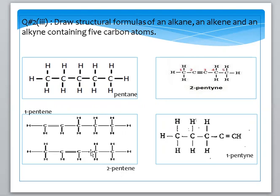If the double bond is at position three or four, numbering starts from the nearest end. So there are two main possibilities for the pentene structural formula: 1-pentene with the double bond between C1 and C2, and 2-pentene with the double bond between C2 and C3. For pentyne with a triple bond, there are similarly two possibilities: 1-pentyne and 2-pentyne.